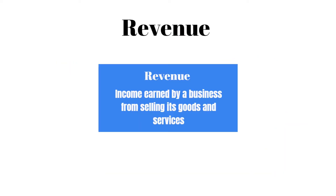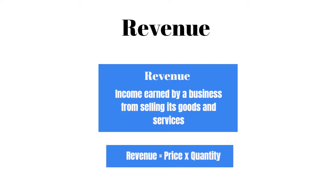Revenue is income earned by a business from selling its goods and services. Most of a business's income comes from goods and services sold. Revenue is sometimes referred to as sales, sales revenue or even turnover. Revenue can be calculated like this: Revenue equals price multiplied by quantity — the price of the product multiplied by the quantity sold.